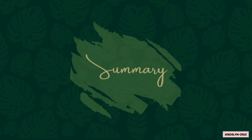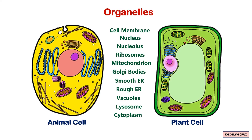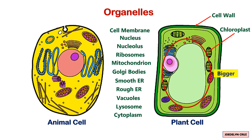To sum up, the organelles present in plant cells only are the cell wall and chloroplast. On the other hand, vacuoles in plant cells are bigger than in animal cells.